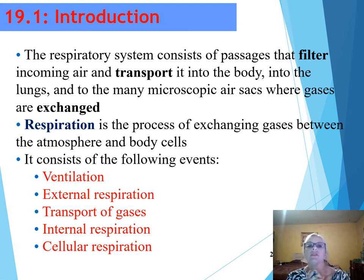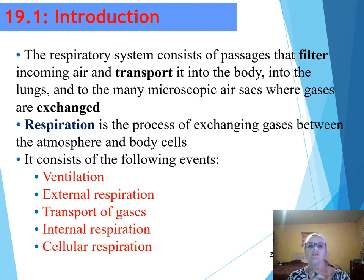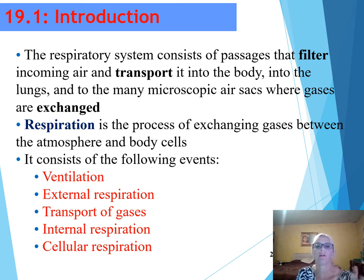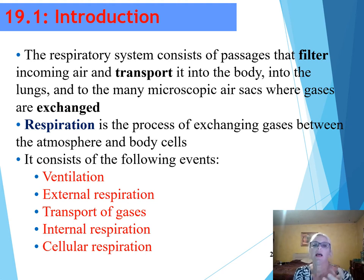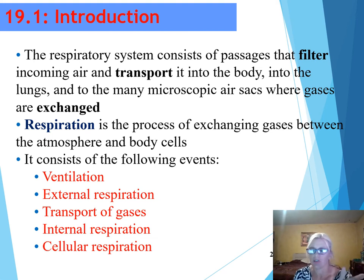Respiration is the process of exchanging gases between the atmosphere and body cells. It has five events: ventilation is the movement of air in and out of the lungs, commonly called breathing. External respiration is exchange of gases between the air in the lungs and the blood. Transport of gases by the blood occurs between the lungs and the body cells. Exchange of gases between the blood and body cells is internal respiration. And lastly, oxygen is used and the production of carbon dioxide occurs as a byproduct of cellular respiration, which is vitally important because that is where we get ATP for all of our body cells and all of our metabolic activities.